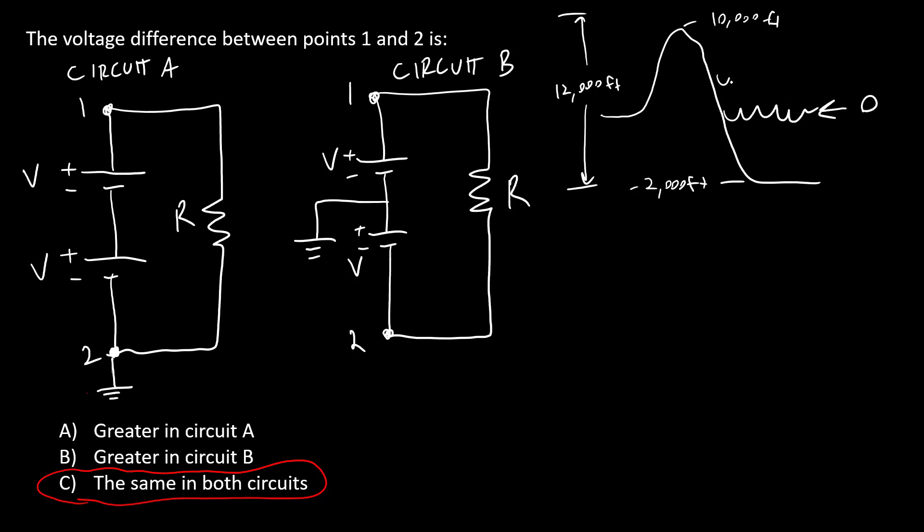If my sea level rises or sinks, if I move my zero level up and down, that doesn't change this. The difference between the top of the mountain and the bottom of the ocean is still 12,000 feet. It's the same idea in this circuit.